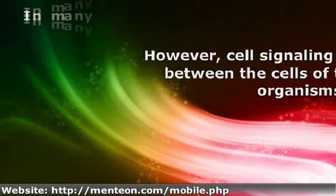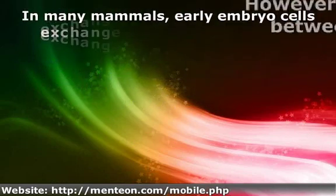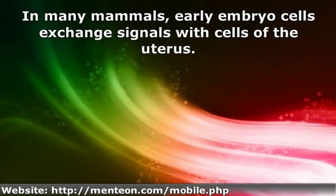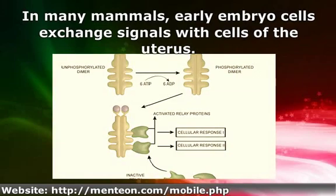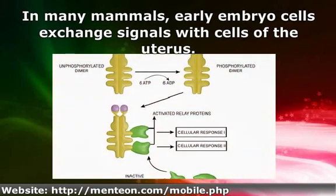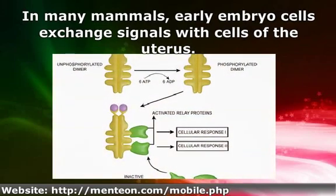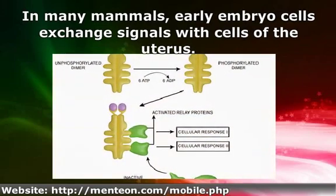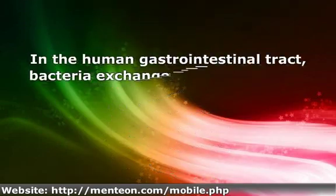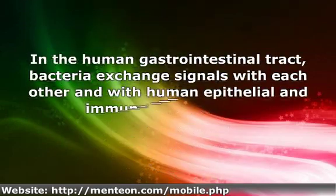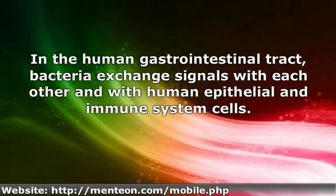In many mammals, early embryo cells exchange signals with cells of the uterus. In the human gastrointestinal tract, bacteria exchange signals with each other and with human epithelial and immune system cells.